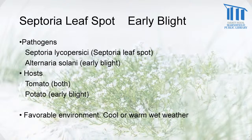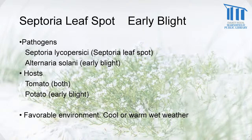The next ones are septoria leaf spot and early blight. I'm going to talk about these together because they are hard to tell apart, and a lot of times plants will have both. This is a disease of the tomato and potato family — somewhat on peppers and eggplants, but by far mostly tomatoes and potatoes. The favorable environment is cool or warm, wet weather.